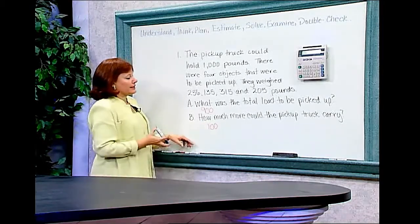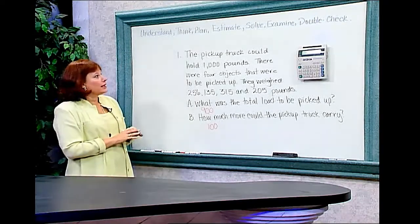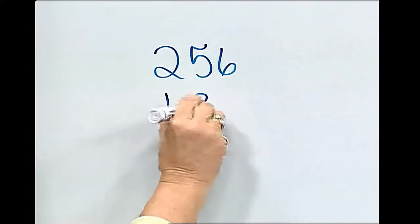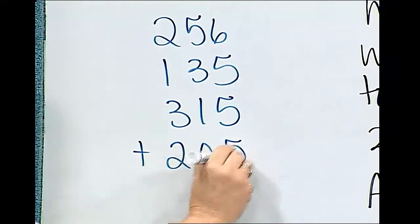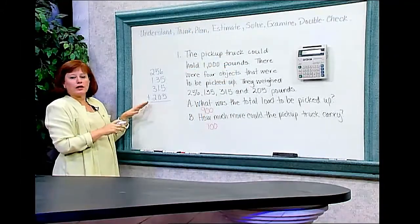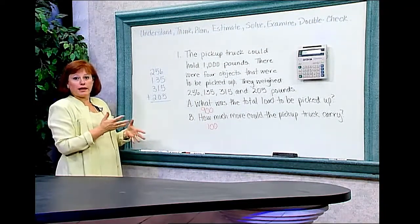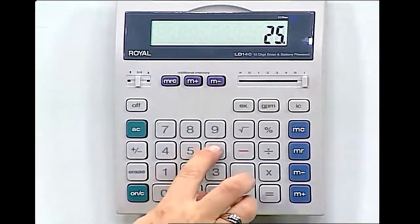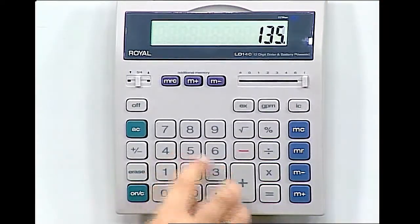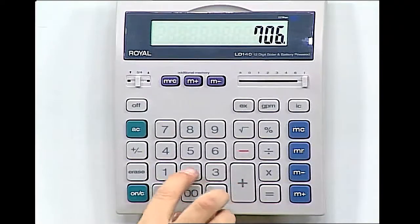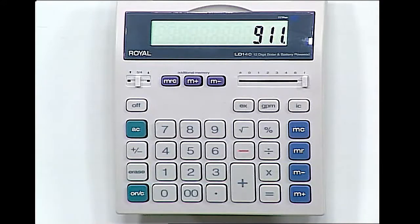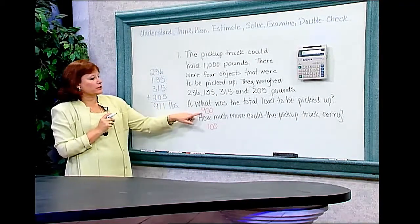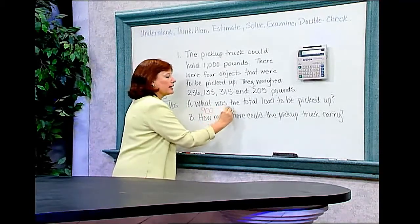So what I'm going to do is check my problem to see, I'm going to solve my problem to see if these are the answers that I truly come up with. Now my plan for problem A was to add up the various weights. So what I want to do is add 256, 135 pounds, 315 pounds, and 205 pounds. These are the weights that I want to add together to find out the exact amount that the truck is being required to pick up. I'm going to move to my calculator to do this computation. I'll turn my calculator on and make sure that it's clear, and I'll add up the weights. I have 256 pounds plus 135 pounds plus 315 pounds plus 205 pounds. And it tells me my total is 911 pounds. So I know the total weight that the truck is being required to carry is 911 pounds. Pretty close to my estimate of 900. The actual answer is 911 pounds.